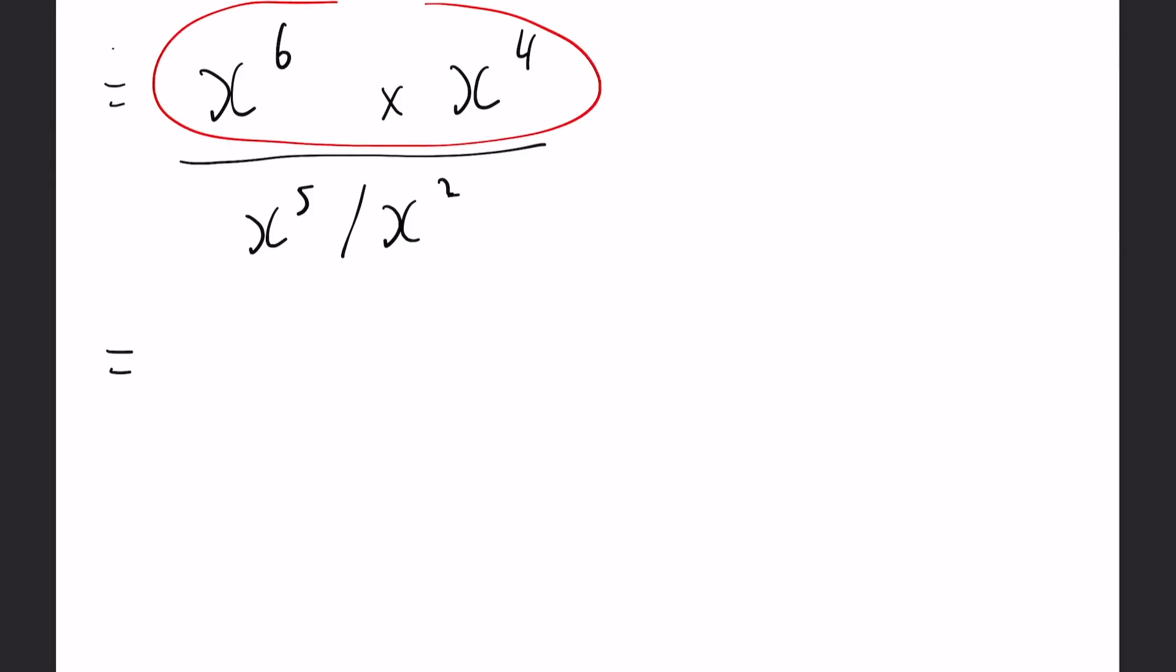So for this next part we can resolve the numerator and the denominator in one because it keeps it nice and clear. x to the power of 6 times by x to the power of 4, we're going to have x to power of 10 because remember our rule of timesing we add the powers, and then divide by x to the power of 5 divide by x to the power of 2, so 5 and 2 we subtract them because we're dividing this time leaving us with x to the power of 3. And finally we have another division so we subtract the powers and we're going to be left with x to the power of 7.